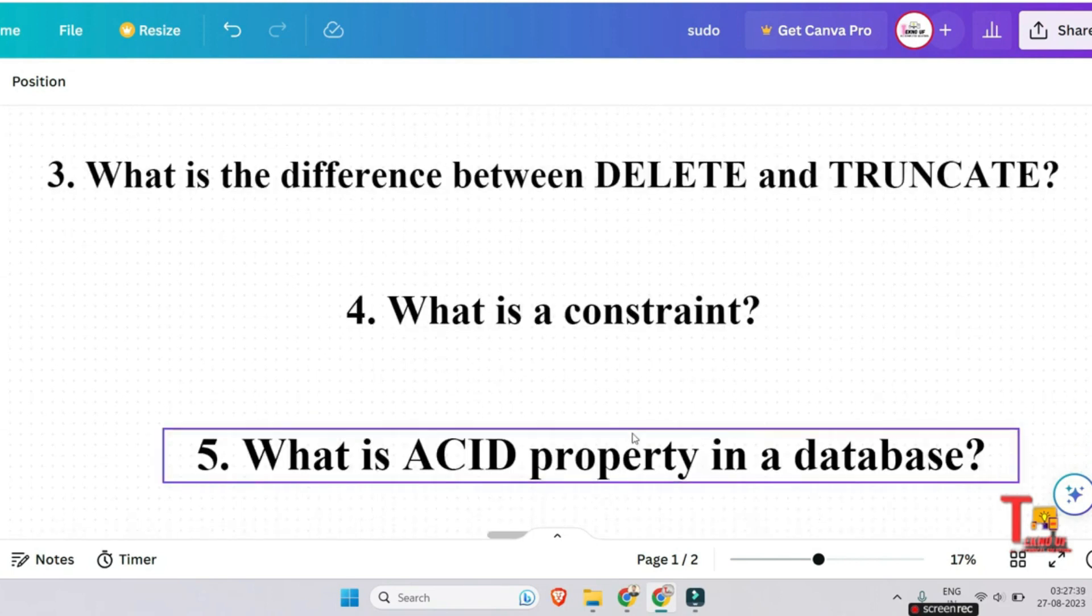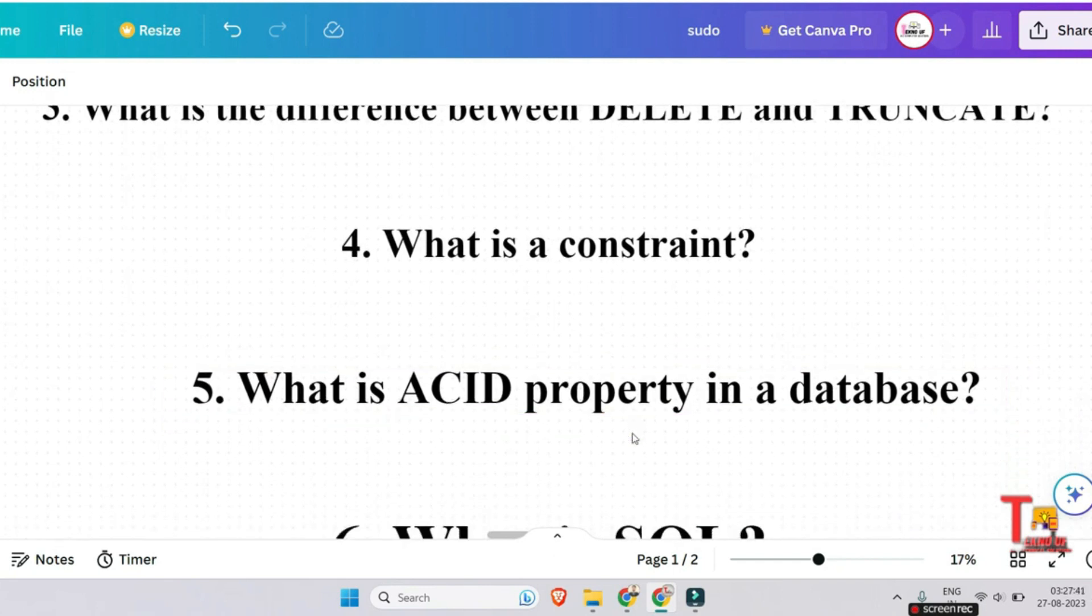The next question and very important question is what is ACID property in a database? Well, actually I was talking about sixth question, but this is actually fifth question. This is very important for CS IT students. What is ACID property in database? Actually, the full form of ACID is atomicity, consistency, isolation, and D is durability.